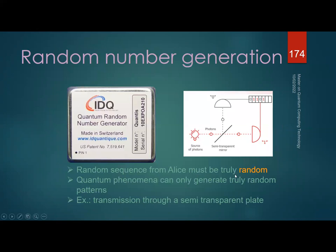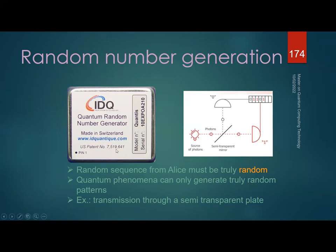Quantum random number generators (QRNGs) are also needed. Alice must send a truly random sequence — anything non-random can be reproduced by studying the circuit. The only phenomena considered truly random is quantum. One implementation from ID Quantique uses a semi-transparent mirror: photons are sometimes reflected, sometimes transmitted — this quantum randomness generates the random bits. Currently they operate at around 60 Mbps, though higher speeds are needed to match Alice's transmission rate.